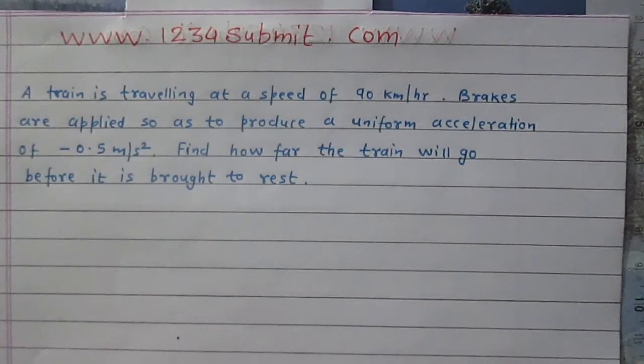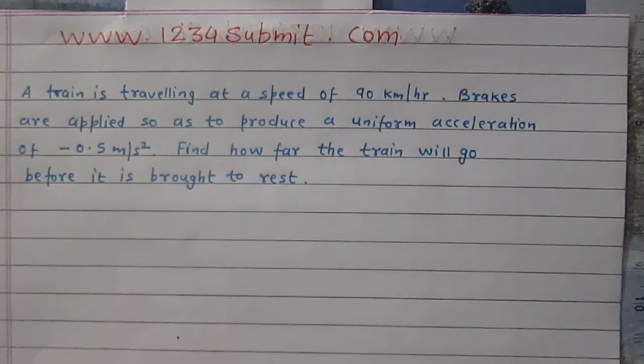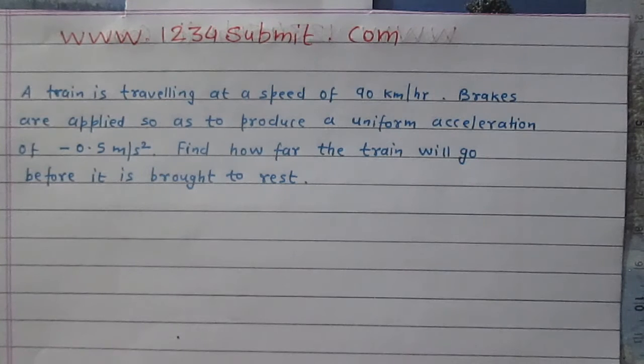In this question, we are given that a train is traveling at a speed of 90 km per hour. Brakes are applied so as to produce a uniform acceleration of -0.5 m per second square. And we are to find how far the train will go before it is brought to rest.